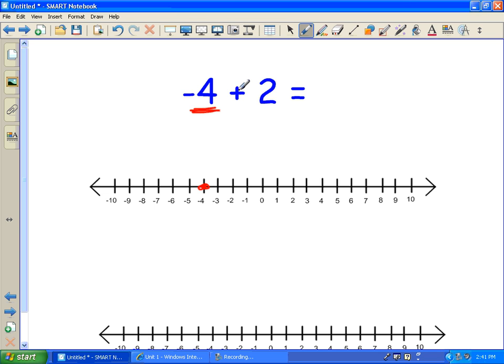And then we're going to add 2, or a positive 2 if we wanted to put the plus sign there. So let's add 2 more and jump on the number line. 1, 2, and our answer, and where we end up is negative 2.